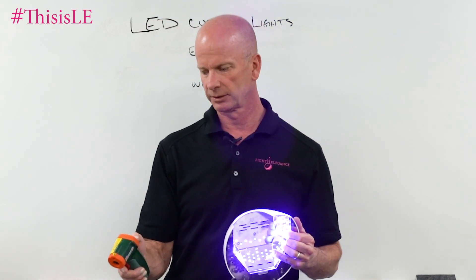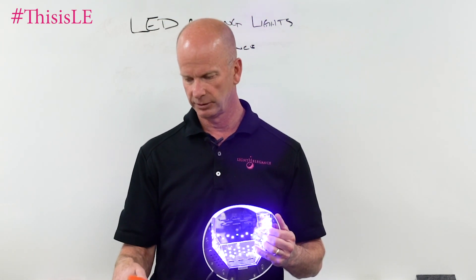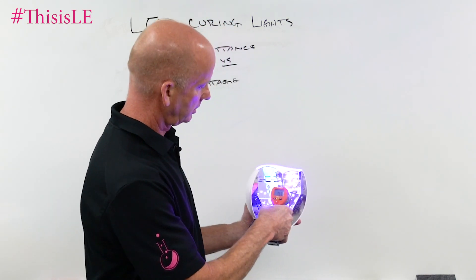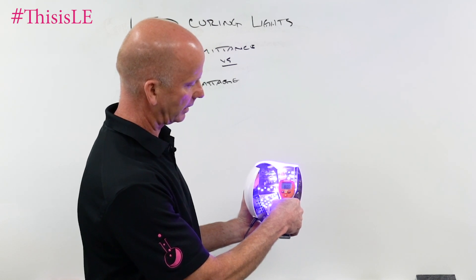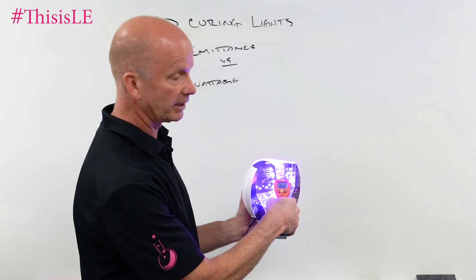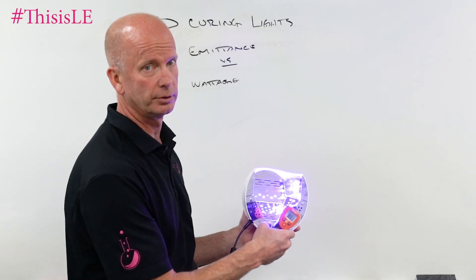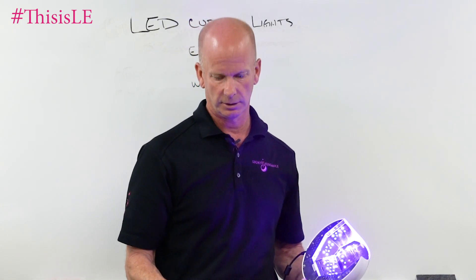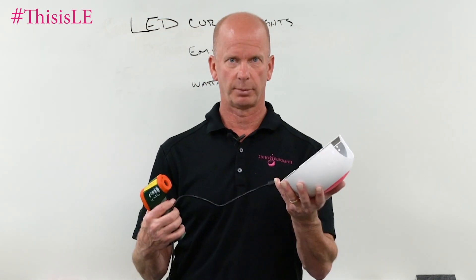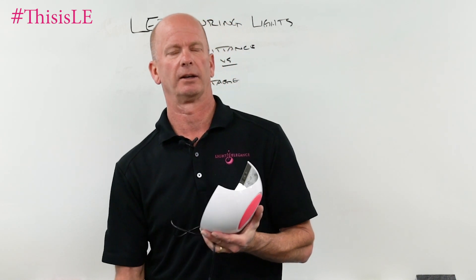We can measure power loss simply by using an infrared thermometer. Here we can measure how much power is being converted to heat by just measuring how much heat is being generated at the light. We're at 82.2 degrees Fahrenheit, whereas our ambient temperature in the room is 74 — so we do have some power loss there, which is the conversion of electricity to heat.